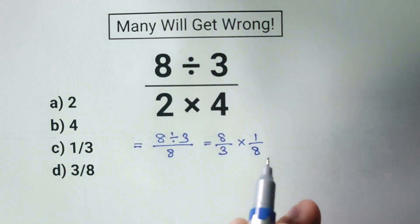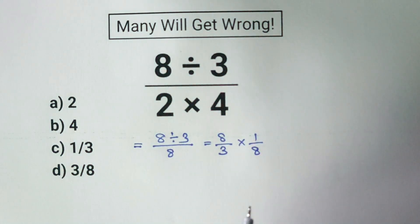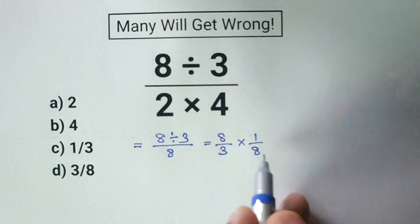Now our expression is 8 over 3 times 1 over 8. But wait, before we multiply, let's see if we can simplify. We notice that 8 in the numerator and 8 in the denominator cancel out.